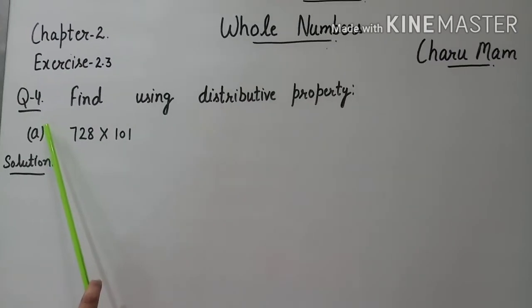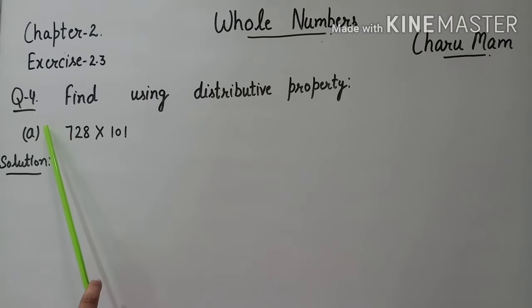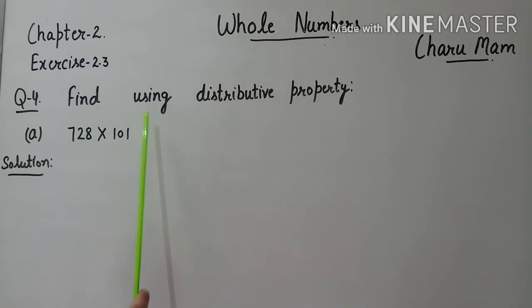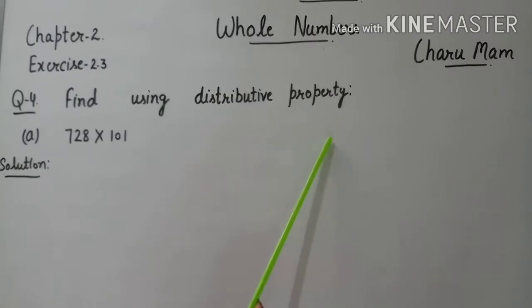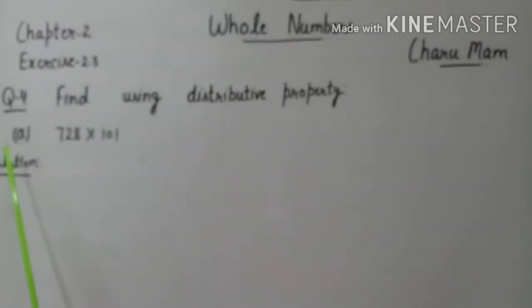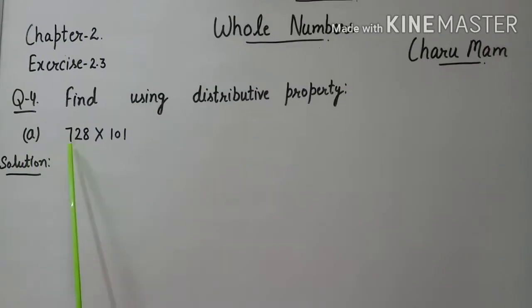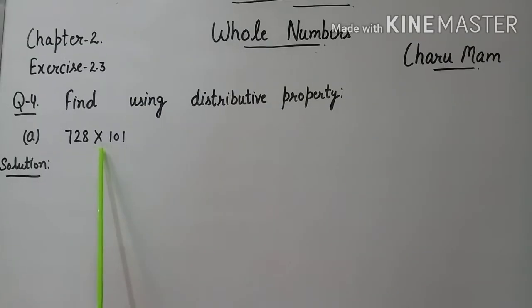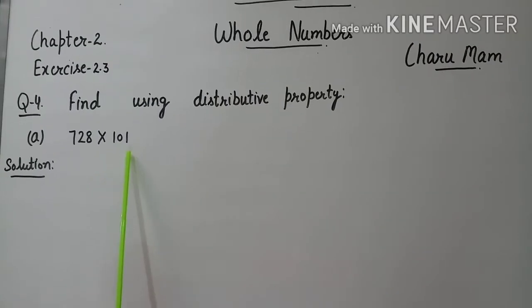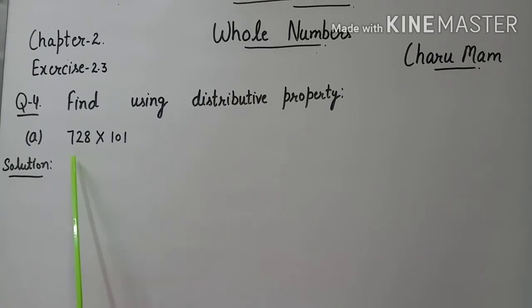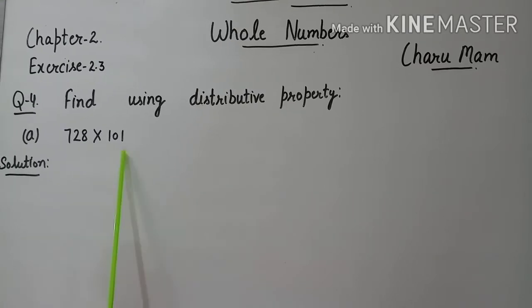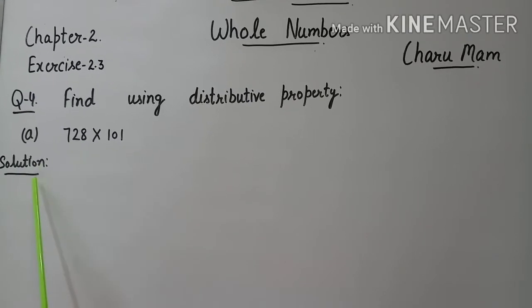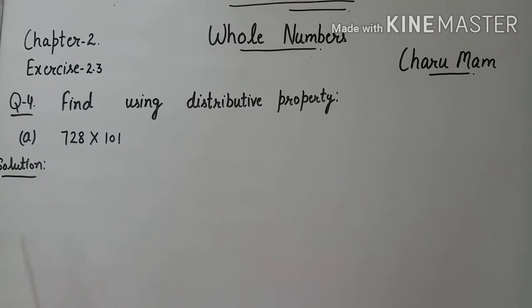Now, question 4 statement is: find using distributive property. Part A: 728 multiplied by 101. हमें इसे distributive property apply करके solve करना है. So, we start solution.